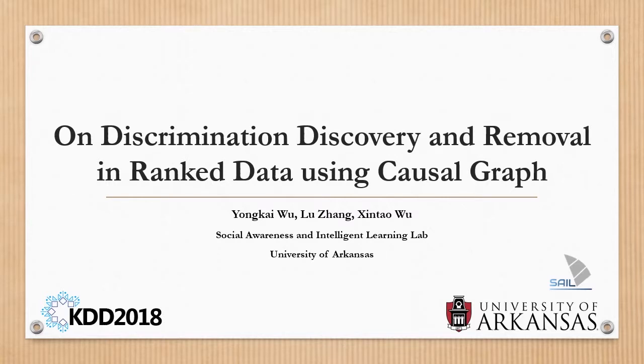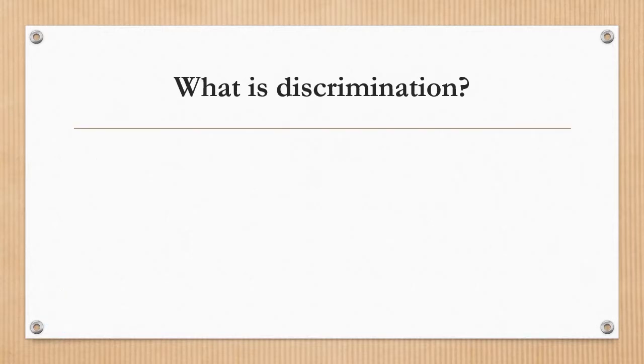On discrimination discovery and removal in ranked data using causal graph. Discrimination is the unjustified distinction of individuals based on their membership in a certain group.